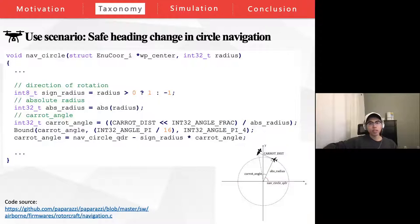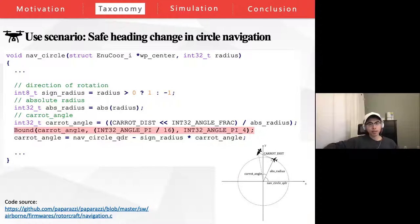This is an example of the use scenario 'safe heading change' under the trajectory management category. Paparazzi follows the carrot-based approach for circle navigation. As shown in the bottom right figure, a virtual continuously updated waypoint is used to guide the next movement of the UAV, similar to using a carrot to attract a mule to move forward. Carrot_angle represents the UAV's heading change in the next time interval. The BF highlighted in the code snippet bonds the carrot angle change within the range between pi/16 and pi/4. This BF instance is necessary, considering that a drastic change in heading may affect the stability of the UAV as well as the correctness of the circle trajectory.